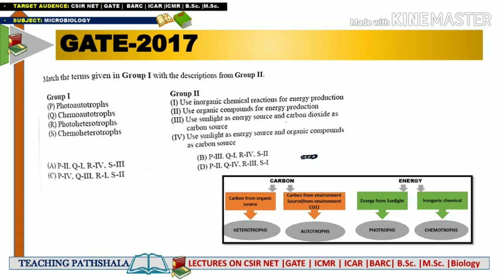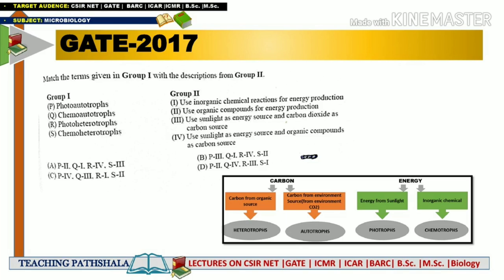Now let's look at a question from GATE 2017. The question asks to match the terms in Group 1 with descriptions in Group 2, where all the different nutrition modes of microorganisms are listed. For P, which is photo-autotrophs, the definition matches organisms that take energy from sunlight and fulfill their carbon requirement with environmental CO2. So P matches with the third option in Group 2: use of sunlight as an energy source and carbon dioxide as a carbon source.